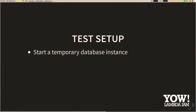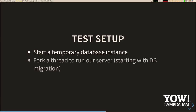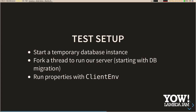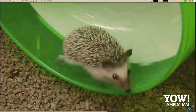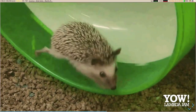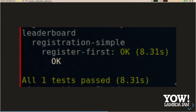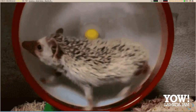A quick note on test setup — not going into details as it's incidental, but to make this work: we start a temporary database instance, fork a thread to run our server using the database's configuration, start that off with a database migration for a fresh sane schema, and then run our properties using the servant-client environment for the server we've just kicked off. And we get a test pass.